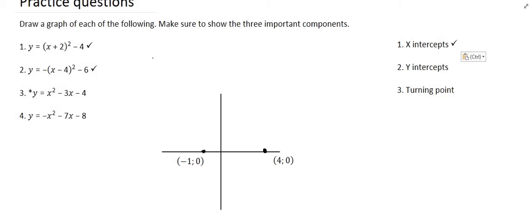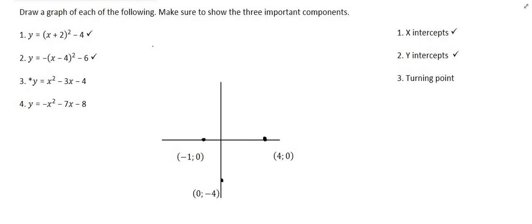We now find the y-intercept by making x equal to zero. Plugging that into the calculator gives a y-intercept of negative 4. We can place that on the diagram.